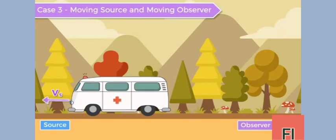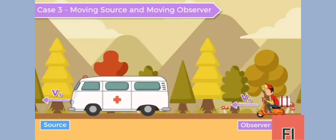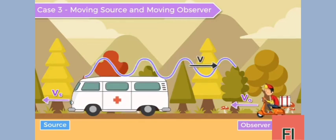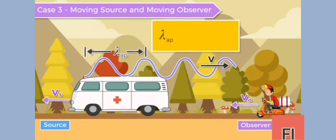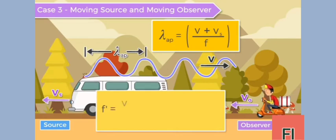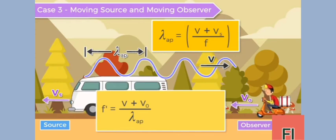Case 3: Moving Source and Moving Observer. In this case, if both the source and the observer are moving in the same direction with velocities vₛ and v₀ respectively, the sound wave produced by the source has frequency f and the apparent wavelength is equal to (v + vₛ) / f, where v is the velocity of sound. This sound wave will approach the observer at a relative velocity of v + v₀. Therefore, the apparent frequency heard by the observer is f' = f × (v + v₀) / (v + vₛ).